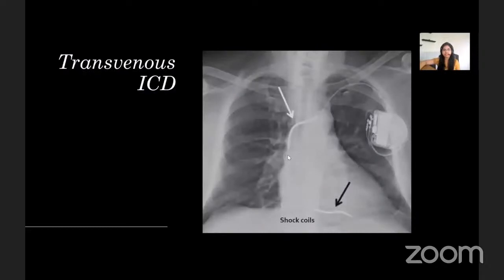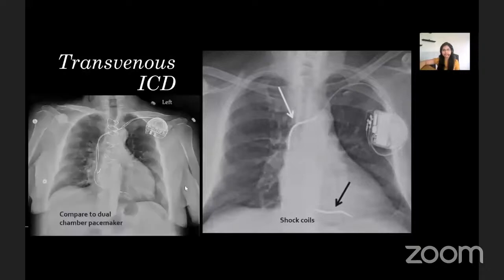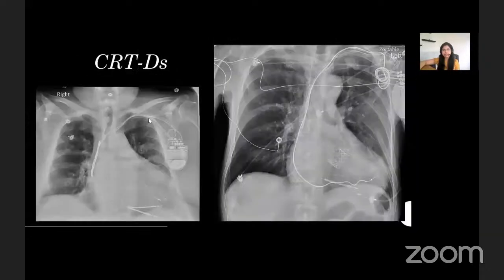Transvenous ICDs contain a lead with either one or two metal shock coils. Note the shock coil placed at the brachiocephalic vein and superior vena cava junction and a distal shock coil in the right ventricular apex. Also note the difference in thickness of the shock coil compared to the pacemaker lead. Transvenous ICDs are often combined with biventricular pacemakers to provide resynchronization therapy to high-risk heart failure patients; these are called CRTDs. Note the combination of pacemaker leads and shock coils in these radiographs.